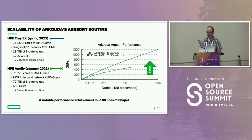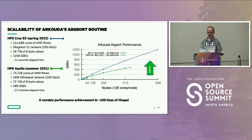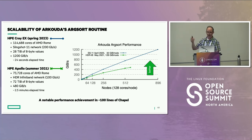This is a scalability graph for Arkouda's argsort routine — crucial because many data science operations do sorting under the covers. Recent performance runs on a Cray EX and an HP Apollo show sorting 28 terabytes in 24 seconds on 73,000 cores, and 72 terabytes in about two and a half minutes on 100,000 cores, achieving 480 to 1,200 gigabytes per second. I'm told by sorting experts this is close to world record performance, and it was done in 100 lines of Chapel.